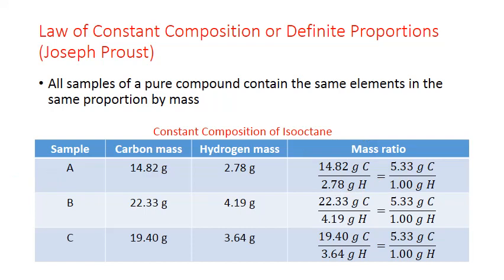Now let's take a second sample, also of iso-octane. So in sample B, we end up getting 22.33 grams of carbon and 4.19 grams of hydrogen. So our absolute masses are larger, but when we take the ratio of those two masses, again we find that it reduces to 5.33 grams of carbon for every one gram of hydrogen.